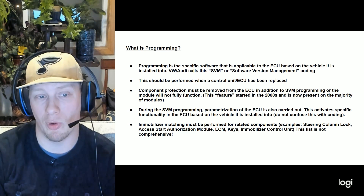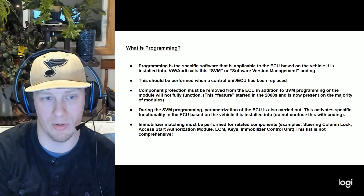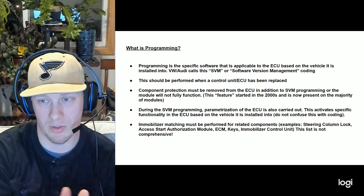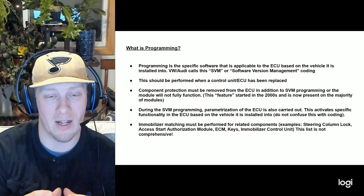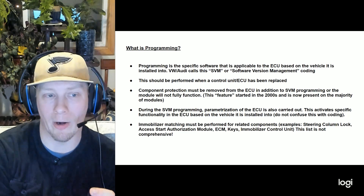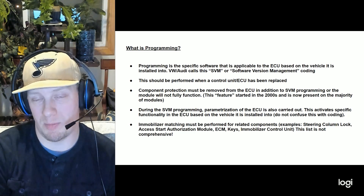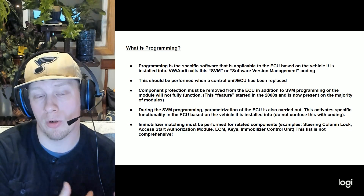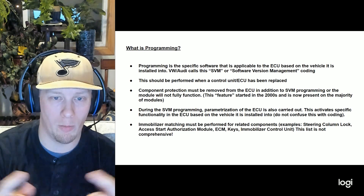Software version management is something you'll need to perform on a new replacement control unit. Once the SVM code is typed in, the scan tool communicates with the database. With ODIS, parametrization then occurs — the database identifies that this control unit is in this specific vehicle and activates all the specific physical functionalities required. BCMs are a great example: the module needs to know how many windows it's operating. The parametrization will literally tell the module which pins it will be activating.